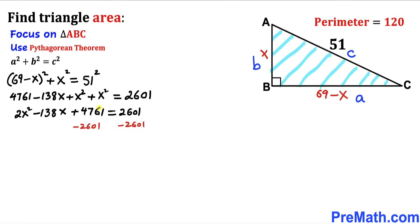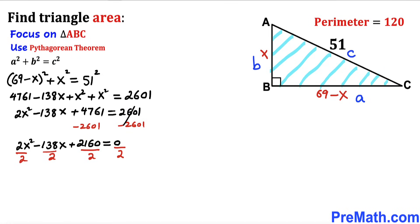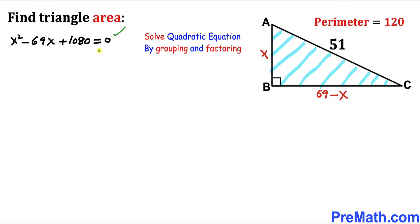Subtracting 2601 from both sides gives 2x squared minus 138x plus 2160 equals 0. This equation is divisible by 2 across the board, so dividing every term by 2 simplifies it to x squared minus 69x plus 1080 equals 0. This is a quadratic equation which we will solve by grouping and factoring.